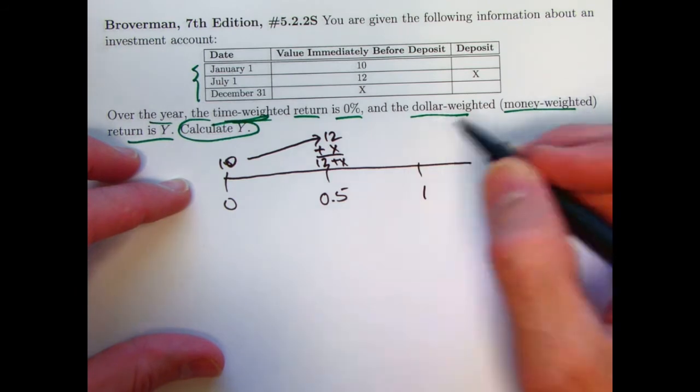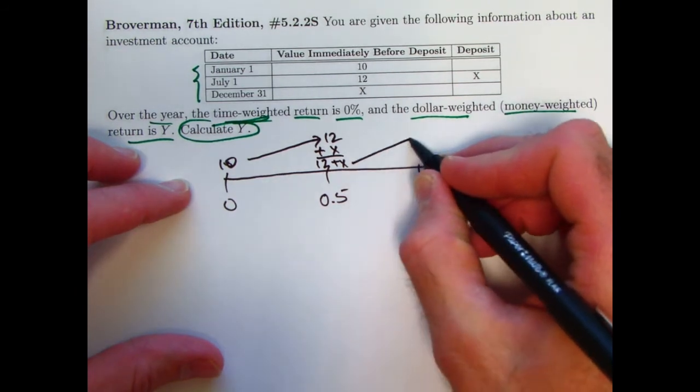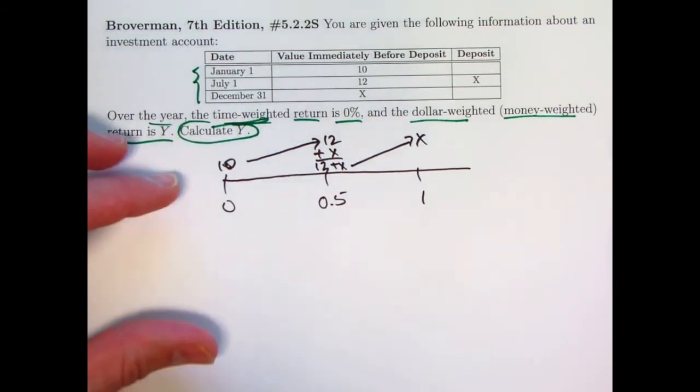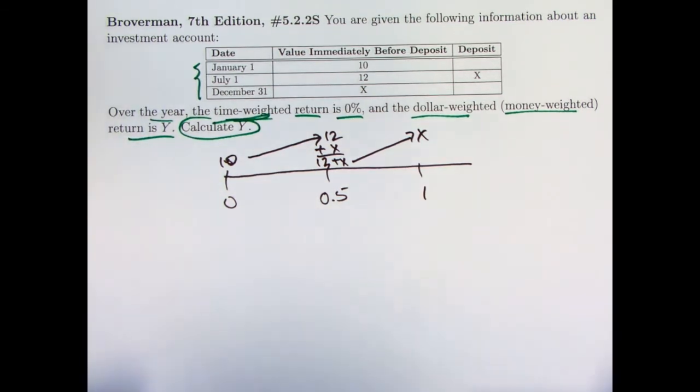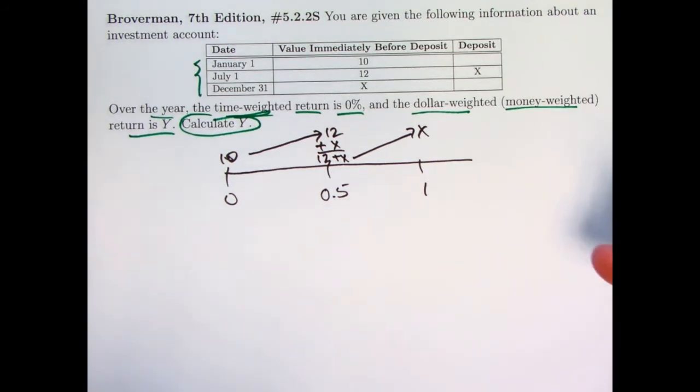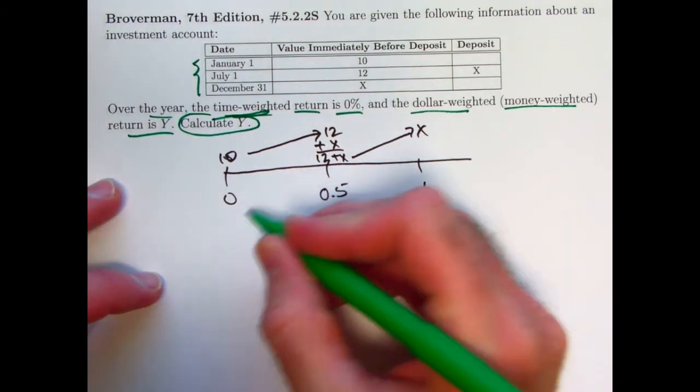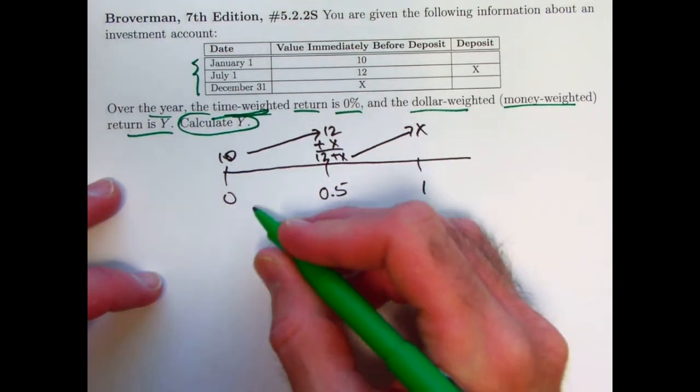And then that amount grows, or I guess in this case, decays down to x over the second half of the year. Okay? So there is a positive return during the first half, but a negative return during the second half. That's a nice way to conceptualize this. Now, what is the time-weighted rate of return? You've got to think about it in terms of growth factors.